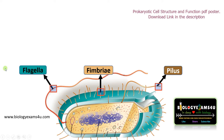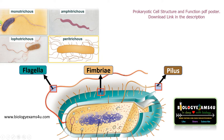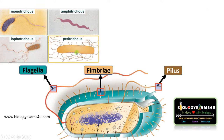Flagella is meant for locomotion or movement of a prokaryotic cell. If there is one flagellum, it is called monotrichus. If there are two on either side, it is called amphitricus. If there is a tuft on one side, it is called lofotrichus. Sometimes it may be present all throughout the periphery, then it is called peritricus.